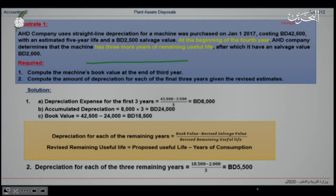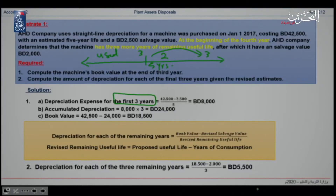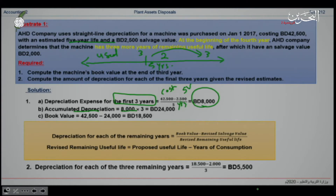In our question, the useful life is 5 years. After they finish 3 years, they decide to extend by 3 more years. First, I should find the depreciation expense for the first 3 years. I take the cost, subtract the salvage value, and divide by the total useful life of 5 years, giving a depreciation expense of $8,000 per year. To find the accumulated depreciation over 3 years, I multiply $8,000 by 3, giving $24,000.